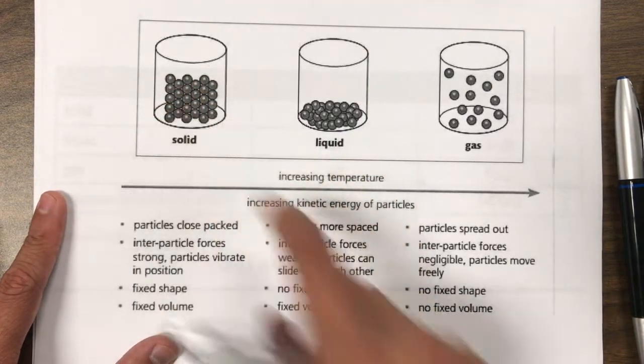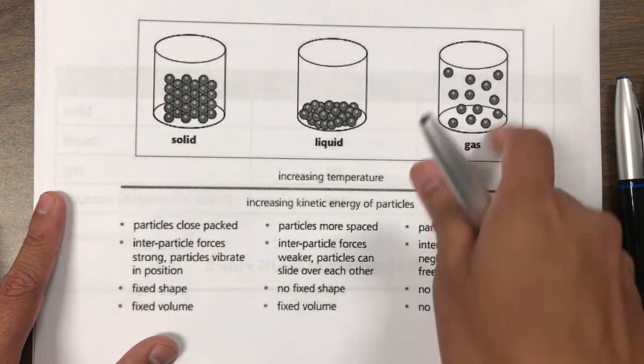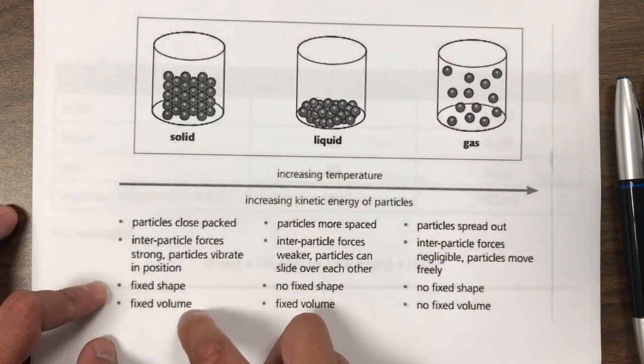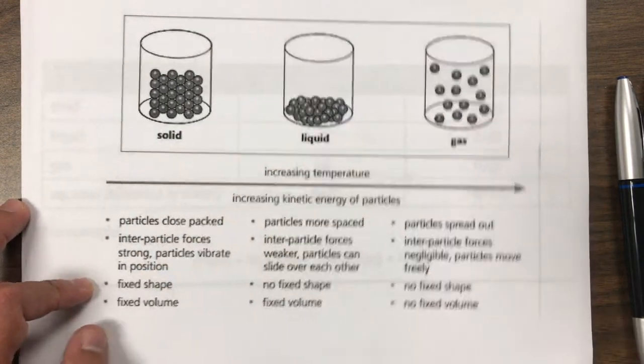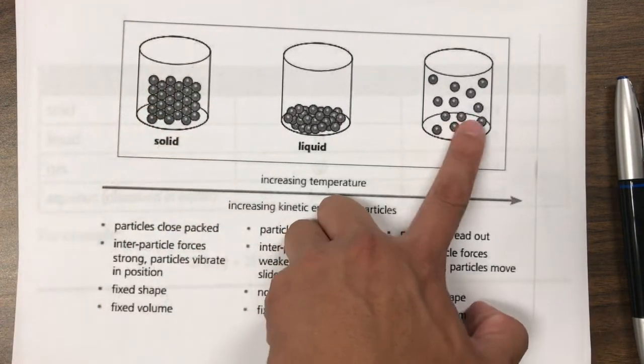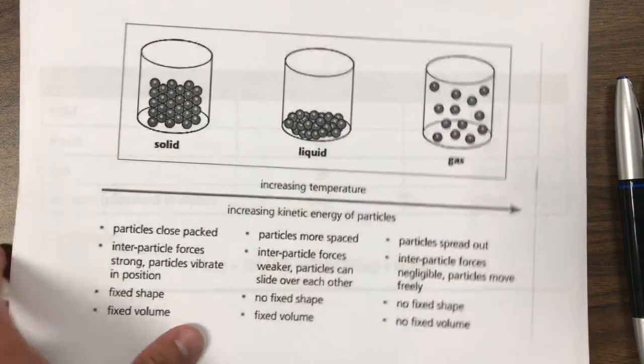In solid, we can see the particles are packed closely together and in the gases, they are far apart. Also notice, take note of the shape and the volume of each of these. The strongest intermolecular forces are going to be here and the weakest intermolecular forces are going to be over here.